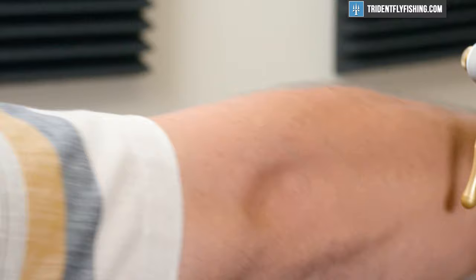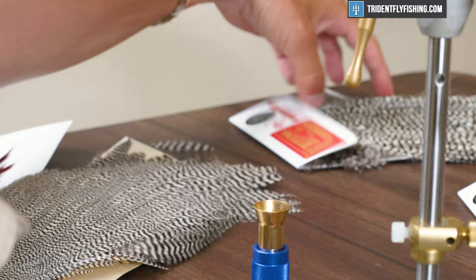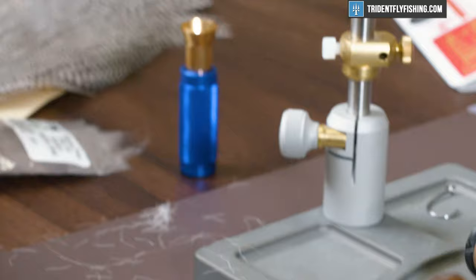It's a size 14. You can use a hackle gauge should you need to. And these are both whiting silver grade dry fly saddles. These things are super nice. A lot of feathers on there as well.